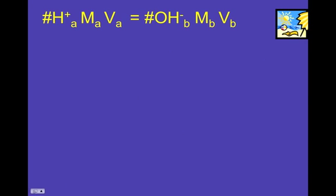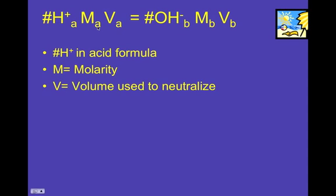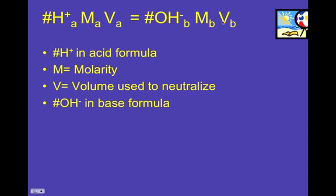But this is an absolutely fantastic formula that you can use to figure out the molarity of your unknown substance by doing a titration. And basically all it is, is you take the number of hydrogens in your acid formula, multiply it by the molarity of the acid, the little subscript a just means acid, and multiply it by the volume that you ended up using. And that's going to be equal to the number of hydroxides in the base formula, or how many hydroxides the base would produce times the molarity of the base times the volume of the base.